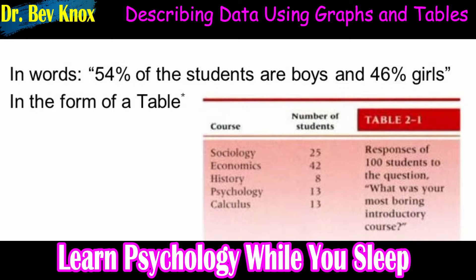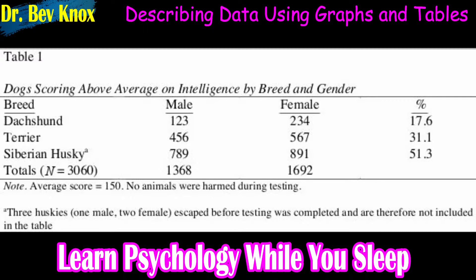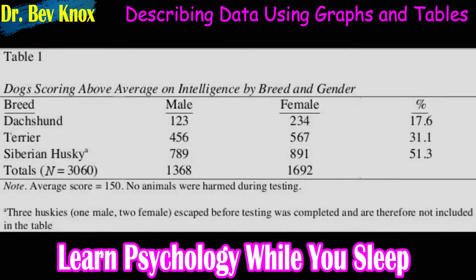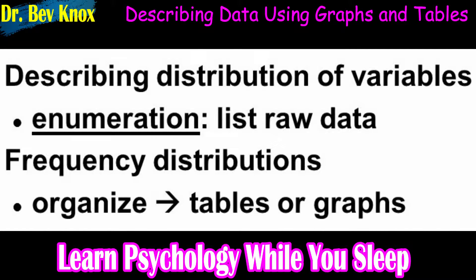When you have a small number of results to report, it is often most efficient to write them out. There are a few important APA style guidelines here. First, statistical results are always presented in the form of numerical numbers rather than words, and are usually rounded to two decimal places — for example, 2.00 rather than spelling out the number two.